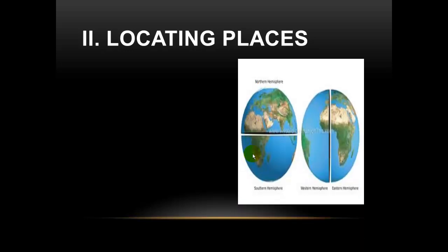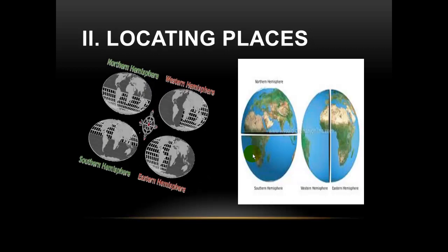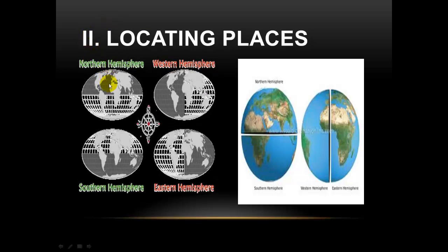This graphic represents that the Earth is actually divided into four hemispheres. The shaded part represents the northern hemisphere. The second shaded part represents the western hemisphere. The third part is the southern hemisphere, and the eastern hemisphere. The first graphic is just another way of showing the northern, southern, western, and eastern hemispheres.